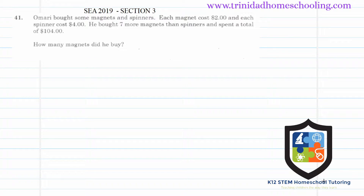Hi guys, I've had some requests to do a solution video to question 41, section 3 from this year's SEA exam, using the bar modeling method. There are other methods you could use to solve this, and two of them are shown in another video by another teacher — I'll link to his video in the description box below so you can see which method your child prefers. This video will be using the bar modeling method to solve an unequal sharing problem.